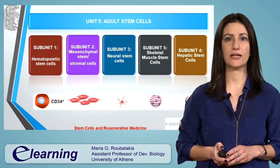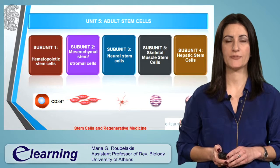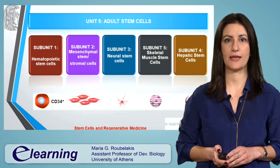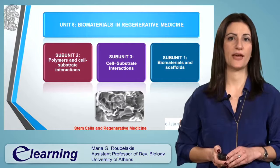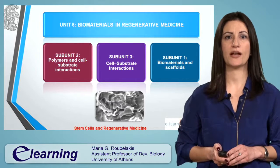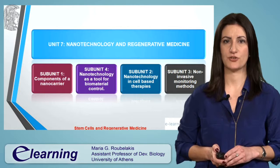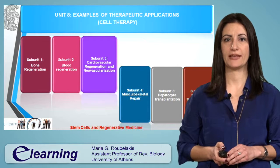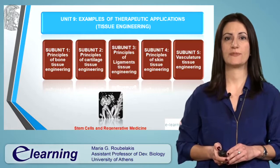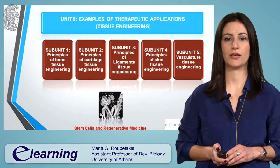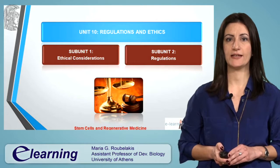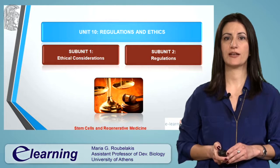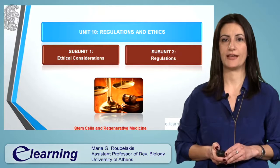The fifth unit includes information on the major adult stem cell types such as hematopoietic, mesenchymal, neural, muscle or hepatic stem cells. The use of biomaterials in regenerative medicine is discussed in the sixth unit, whereas the role of nanotechnology in regenerative medicine is introduced in the seventh unit. Examples of cellular therapy applications are discussed in the eighth unit. Unit 9 describes examples of tissue engineering therapeutic approaches, and finally unit 10 focuses on the regulation and ethics related to stem cells and regenerative medicine.